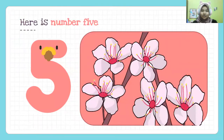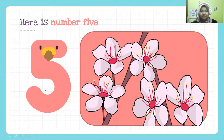We go to number five. Here is number five. One, two, three, four, five. Five flowers represent number five. Okay?